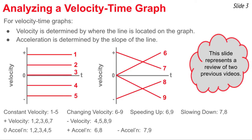Lines 1, 2, 3, 6, and 7 all have one thing in common: they're located above the time axis in the positive region of the graph, so they have positive velocity. Whereas lines 4, 5, 8, and 9 represent objects that have a negative velocity. If we focus on the graphs on the right, lines 6 and 9 are going further and further from the time axis over time — these represent objects that are speeding up. Whereas lines 7 and 8 are approaching the time axis as time progresses, and they represent objects that are slowing down.